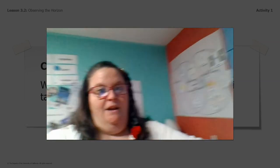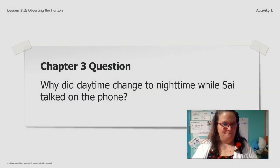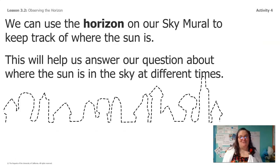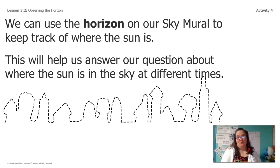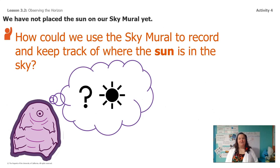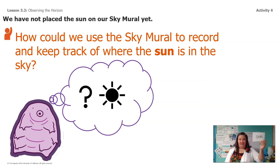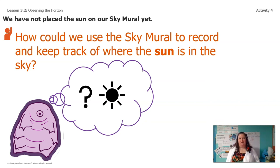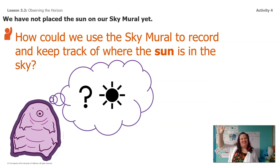That was a lot of work! So you guys will be able to make a sky mural yourselves, and it'll help us answer questions about where the sun is in the sky at different times. You probably noticed that we don't have the sun on our murals yet — and that's because that's what we're going to do next time. So here's the question I want to leave you with: how could we use our sky murals to record and keep track of where the sun is in the sky? Think about that for next time. I'll see you again!